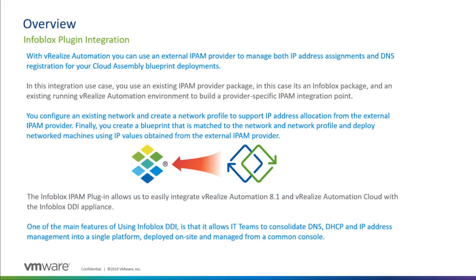With vRealize Automation you can use an external IPAM provider to manage both IP address assignments and DNS registration for your Cloud Assembly blueprint deployments. In this integration use case we use an existing IPAM provider package — in this case the Infoblox package — and an existing running vRealize Automation environment to build a provider-specific IPAM integration point. VMware recently released the IPAM SDK to allow other vendors to create such a package for their solutions.